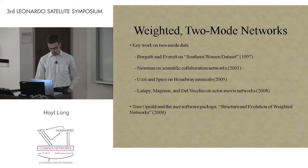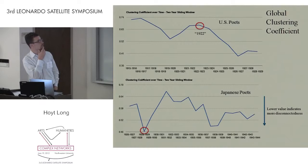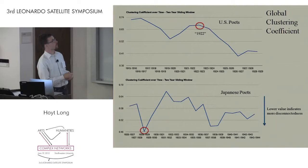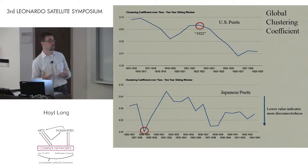We've been using the TNet software package to run some of our models. One measure we're interested in is the clustering coefficient. What's interesting is that when we run it on the US data, it actually confirms what we would expect given the poets we've put in—that after 1922 there is a significant decrease, indicating that there are more clusters that are less connected. This is something that literary historians and observers at the time clearly recognized: that modernism was fracturing, that something was very different about the field.